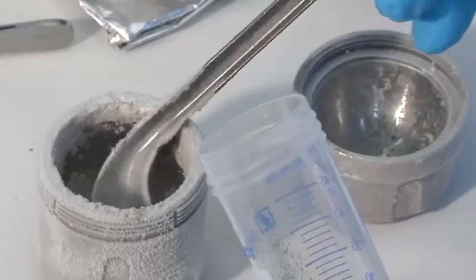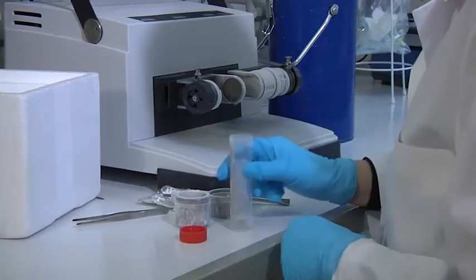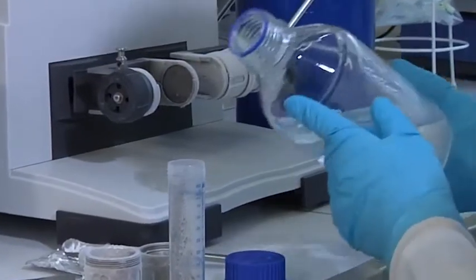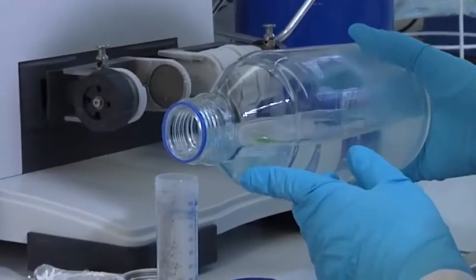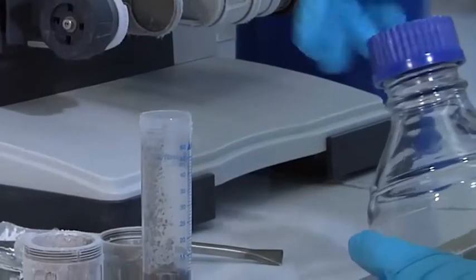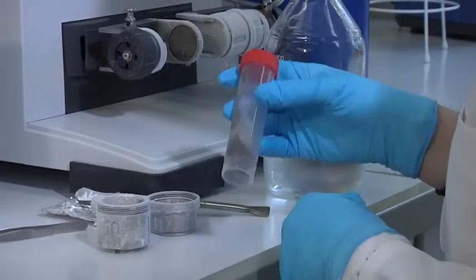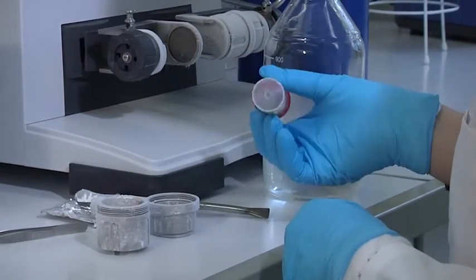For this process, we use the supernatant of the cell centrifugation. For further processing, proteins in the supernatant are precipitated overnight and subsequently centrifuged. The result is a protein pellet which can be found on the bottom of the tube.